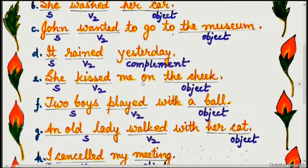Example E: She kissed me on the cheek. 'She' is the subject, 'kissed' is V2, and 'the cheek' is the object.